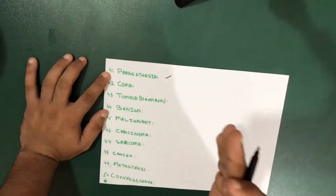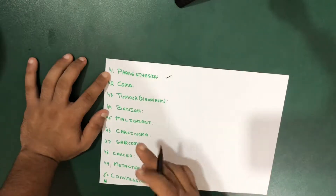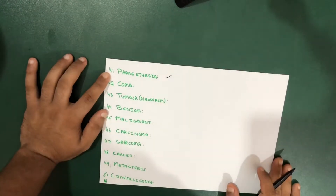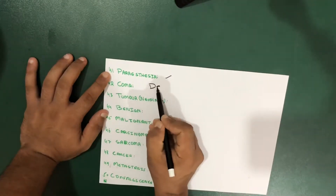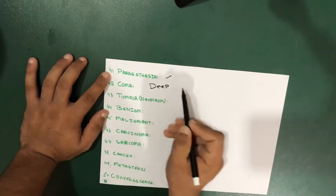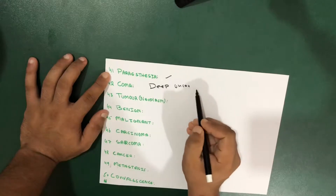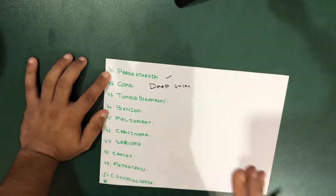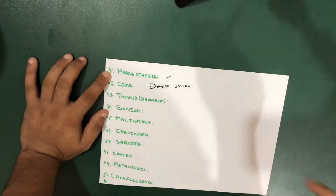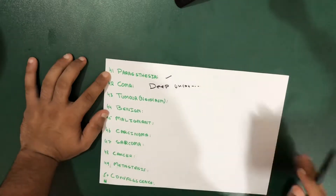Paresthesia is a perverted feeling of sensation. Another word most people have heard of is coma. Coma means deep unconsciousness — it's really deep. You won't be able to sense anything, won't be in a sense of space and time. So it's called deep unconsciousness.